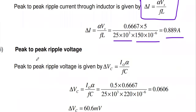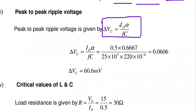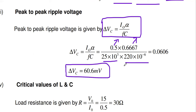For the peak-to-peak ripple voltage: ΔVc = I0 × α / (F × C) = 0.5 × 0.667 / (25 × 10³ × 220 × 10⁻⁶). The answer is 0.0606 V, which in engineering notation is 60.6 × 10⁻³ V = 60.6 millivolts.